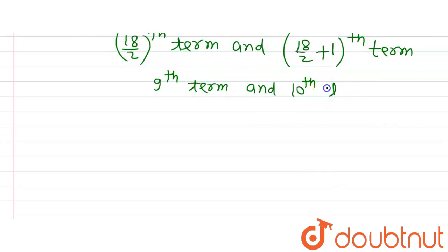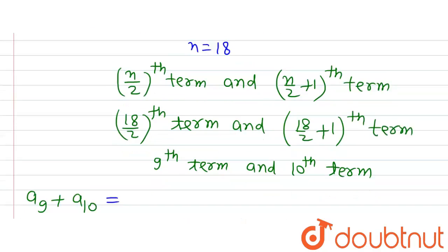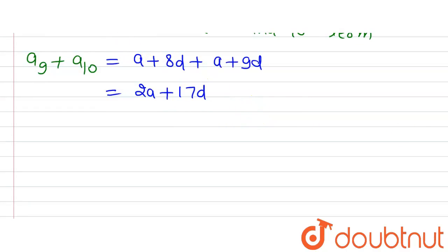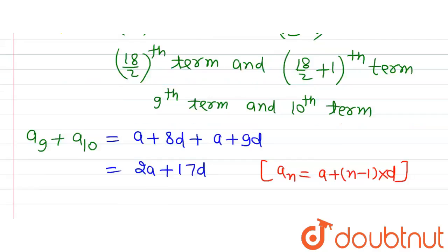We need to find a9 plus a10. Using the formula for the nth term of an AP — a plus (n minus 1) times d — we get a9 equals a plus 8d, and a10 equals a plus 9d. Adding them: a9 plus a10 equals 2a plus 17d.